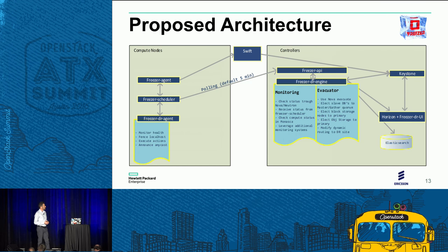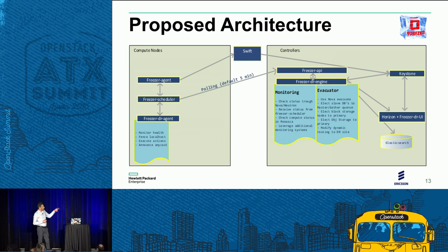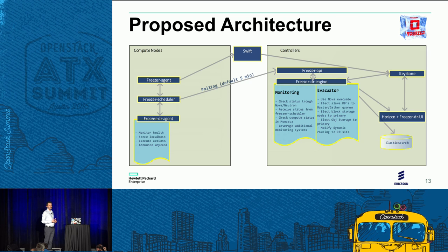Behind the Freezer agent there is the normal Freezer backup way — the scheduler and the agent storing backups in storage such as Swift. The scheduler also manages a new agent, the DR agent, which provides monitoring of the local node. We can do a graceful shutdown of the node if it's not completely failed but we want to evacuate it anyway.